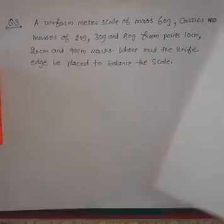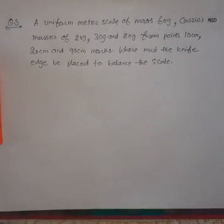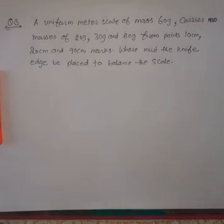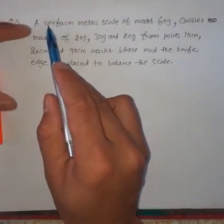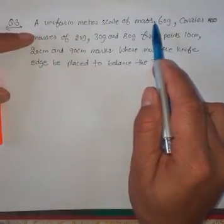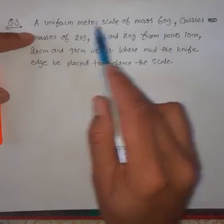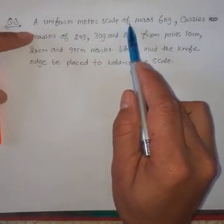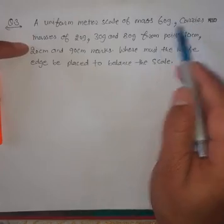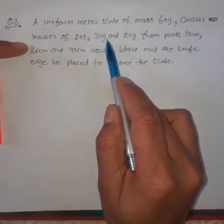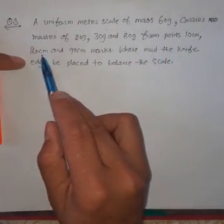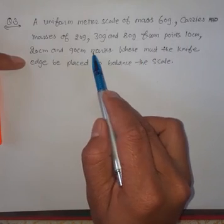Now let us take another important question — the third question. A uniform meter scale of mass 60 gram carries masses of 20 gram, 30 gram, and 80 gram hung from the 10 cm, 20 cm, and 90 cm marks respectively. We need to find where the knife edge (fulcrum) must be placed to balance the scale.